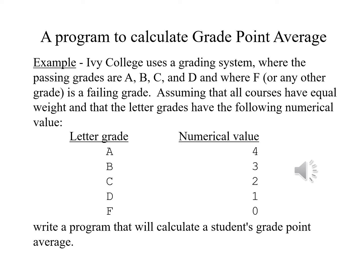Ivy College uses a grading system where the passing grades are A, B, C, and D, and where F or any grade other than A, B, C, or D is a failing grade. Assuming that the courses all have equal weight and that the letter grades have the following numerical values: A is 4, B is 3, C is 2, D is 1, and F is 0. Let's write a program that will calculate a student's grade point average.